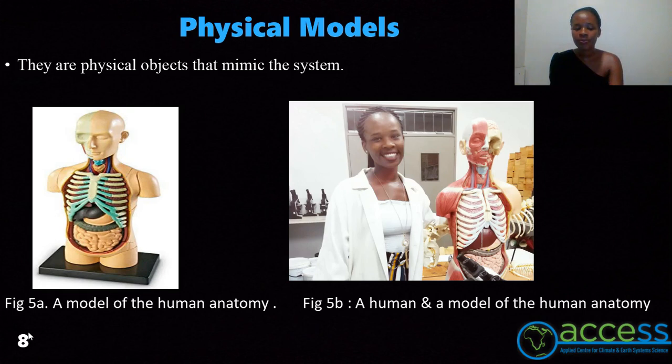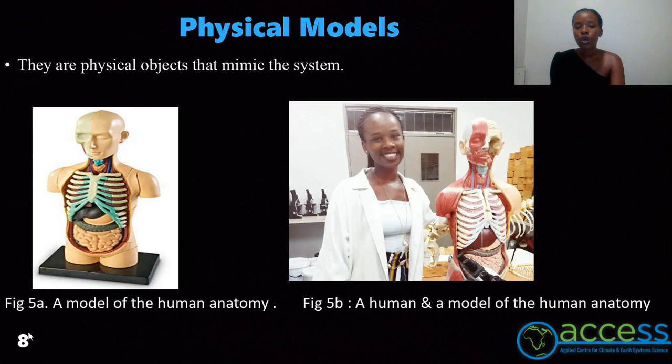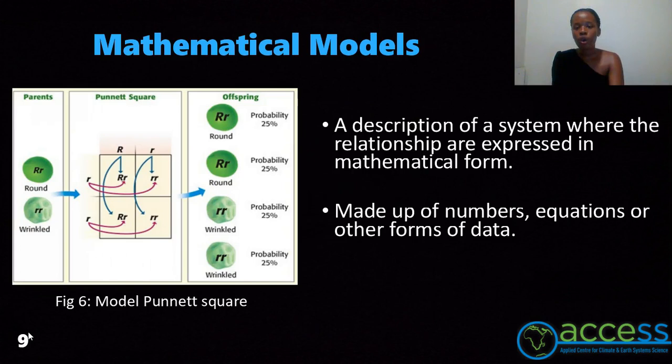For instance, in figure 5a we have a model of human anatomy, whereas in figure 5b we have a real human alongside a model of human anatomy. What is the correlation between a model of a human anatomy and a real human anatomy? The model of a human anatomy is unable to move or to breathe, whilst humans are able to breathe and move.